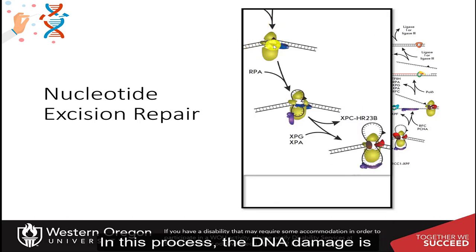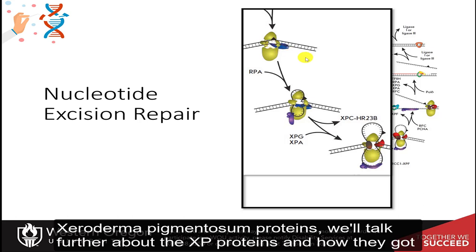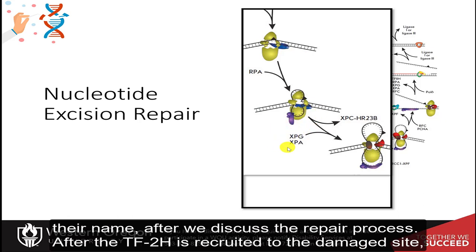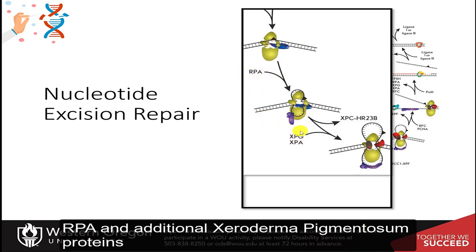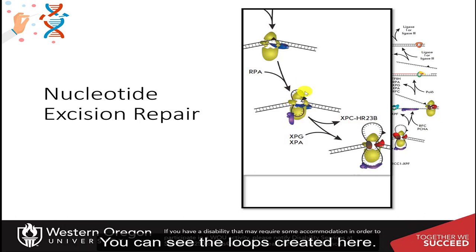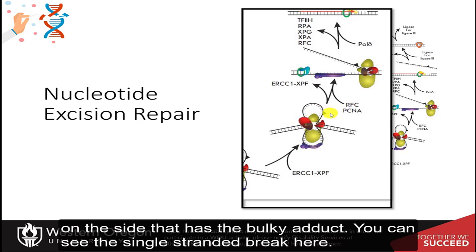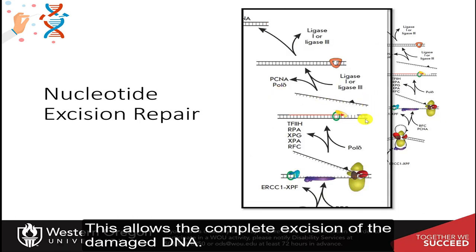In this process, the DNA damage is bulky enough to significantly alter the shape of the DNA. Xeroderma pigmentosum proteins — we'll talk further about the XP proteins after we discuss the repair process — are involved. After TFIIH is recruited to the damaged site, RPA and additional xeroderma pigmentosum proteins join the area and cause the damaged region to bulge apart. You can see the loops created here. Additional factors are used to create a single-stranded break on the side that has the bulky adduct.